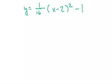Okay, let's look at this question here. Y equals 1 over 16, quantity x minus 2 squared minus 1. First question is, how does this thing open?